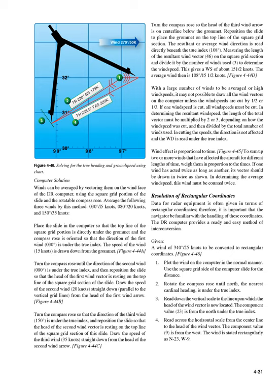Resolution of rectangular coordinates: data for radar equipment is often given in terms of rectangular coordinates. Therefore, it is important that the navigator be familiar with the handling of these coordinates. The DR computer provides a ready and easy method of conversion. Given: a wind of 340°/25 knots to be converted to rectangular coordinates. Figure 4-46. 1. Plot the wind on the computer in the normal manner, using the square grid side of the slide. 2. Rotate the compass rose until north is under the true index. 3. Read down the vertical scale to the line upon which the head of the wind vector is located — component value 23 from north. 4. Read across the horizontal scale — component value 9 from west. The wind is stated rectangularly as N23W9.